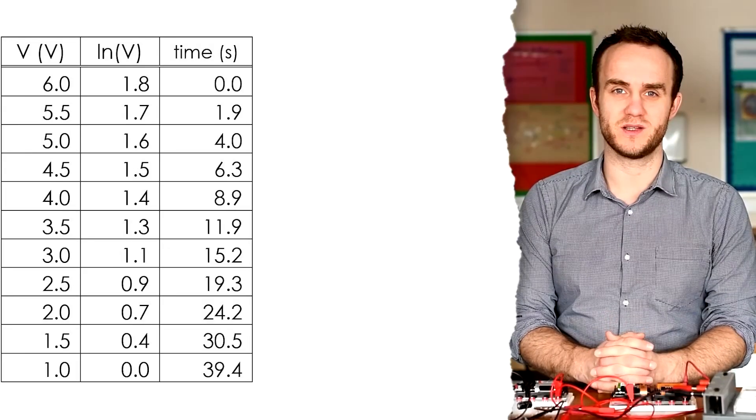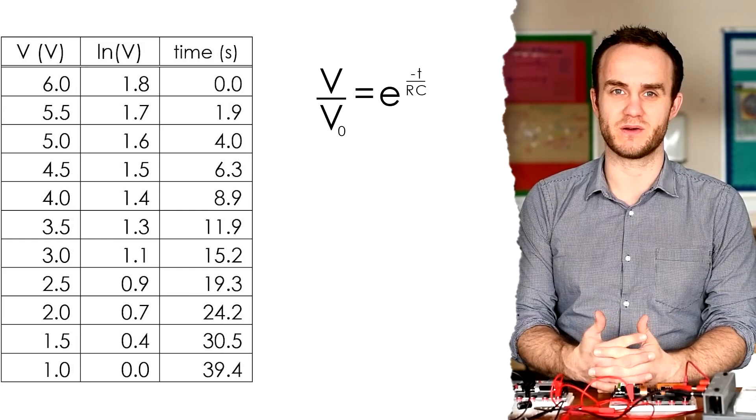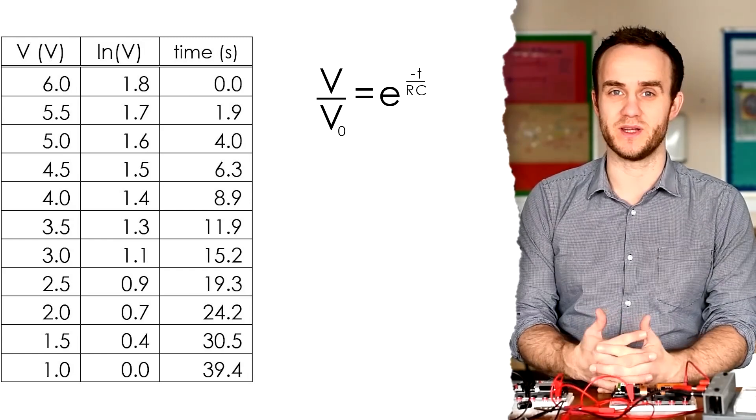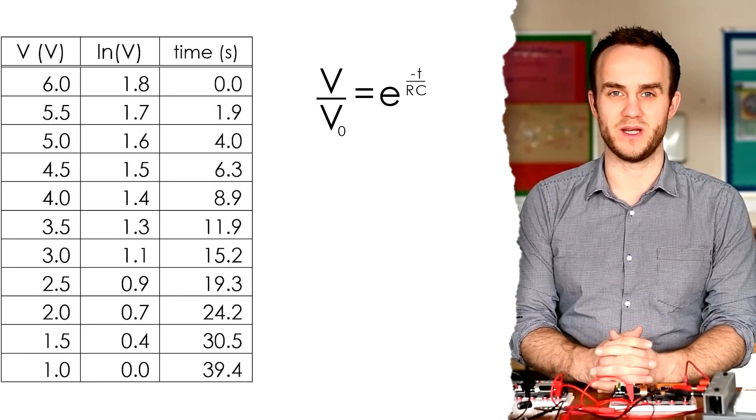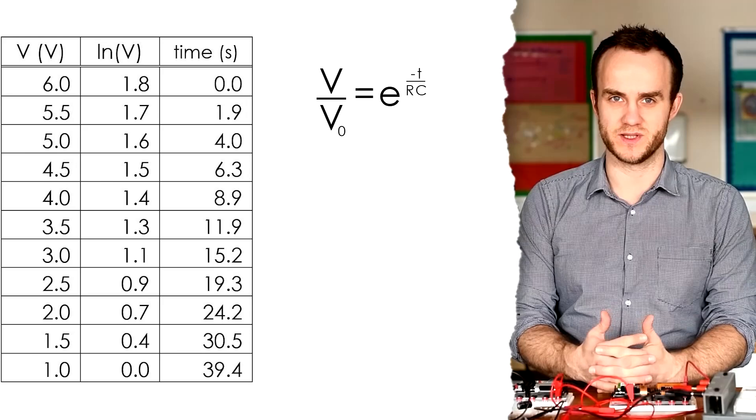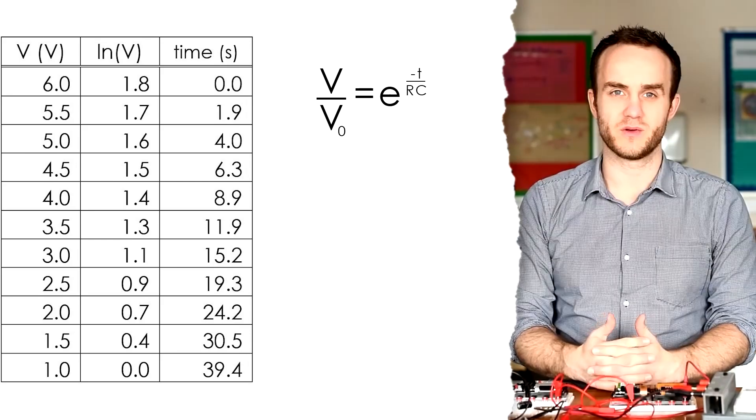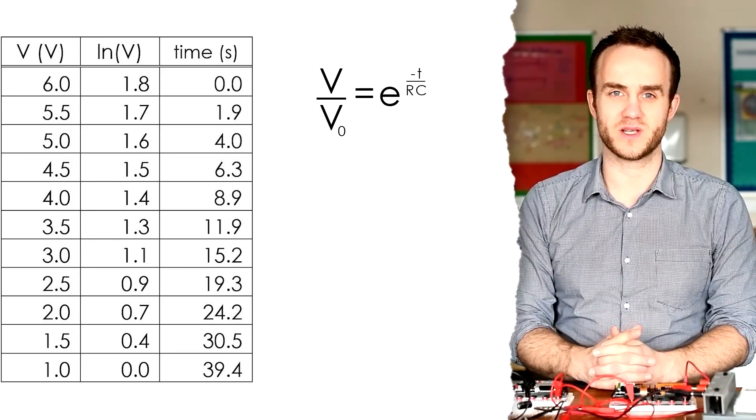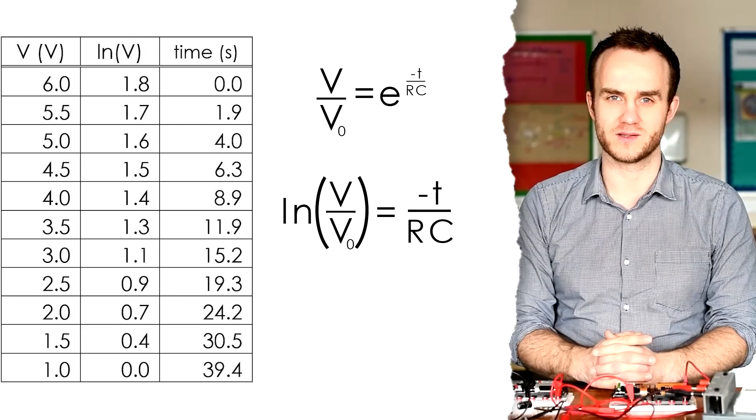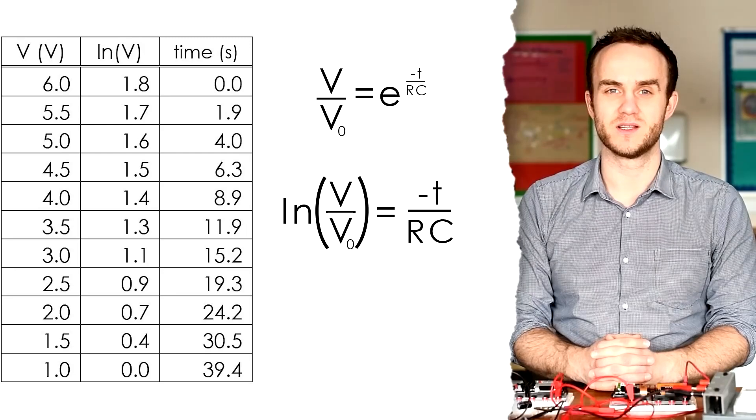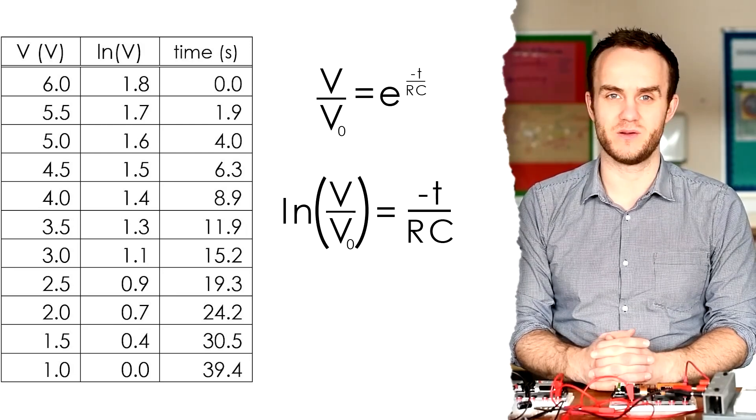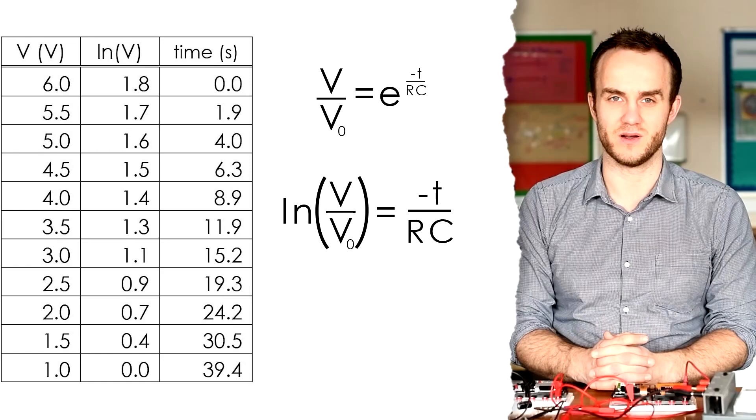Now the equation for capacitor discharge is V over V0, that's the PD divided by the initial PD, is equal to e to the power of minus T. That's the time it takes to go to that PD, divided by RC, resistance times capacitance. So in order to plot this on a graph, we should take the natural log of both sides. LN, or you might call it LUN, I just call it log because it is a log, it's just a natural log. So log of V over V0 is equal to minus T over RC.